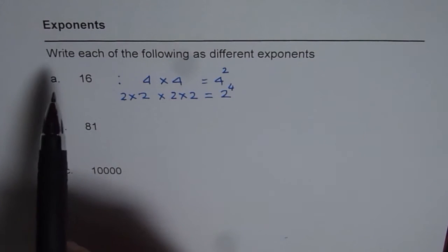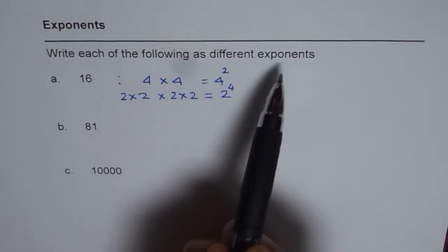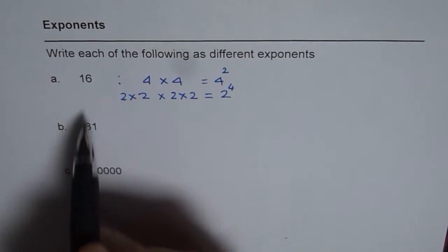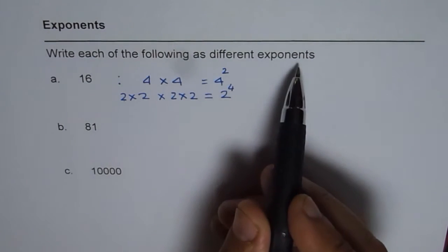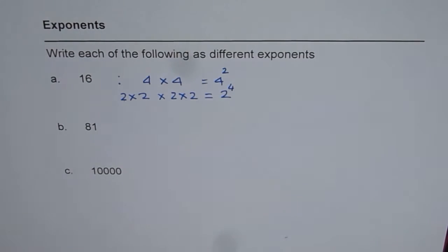When there is a question which says write each of the following as different exponents, we are trying to say these are the numbers given to you. Write them with different exponents means different base and exponent or power combination.